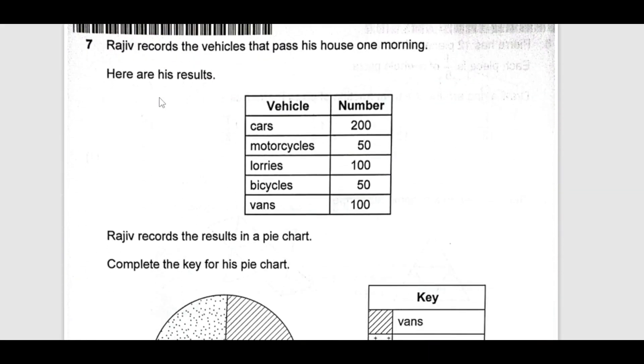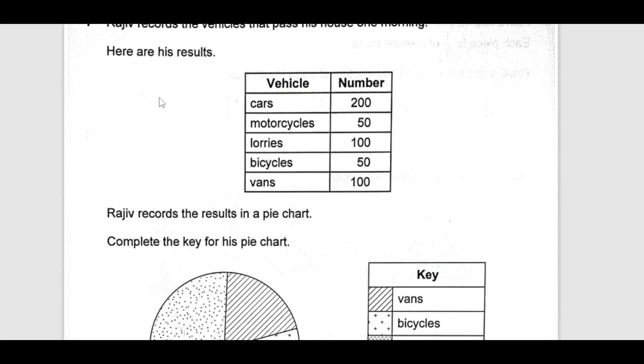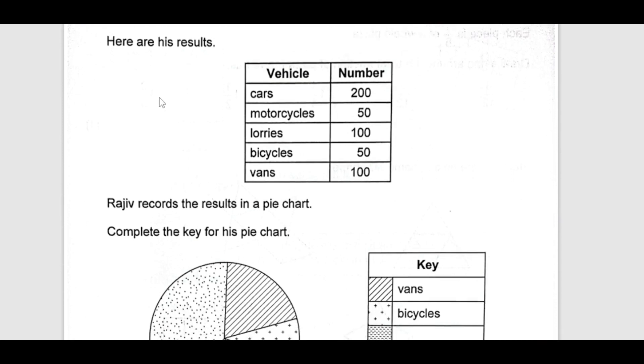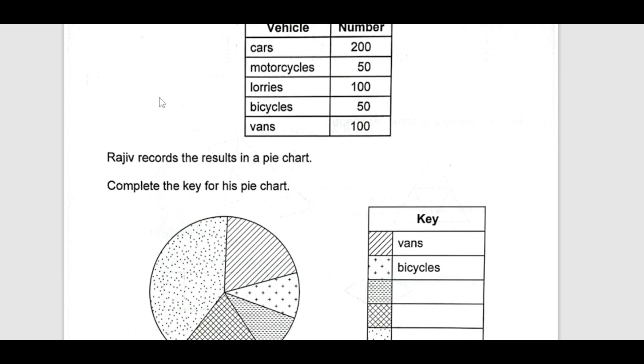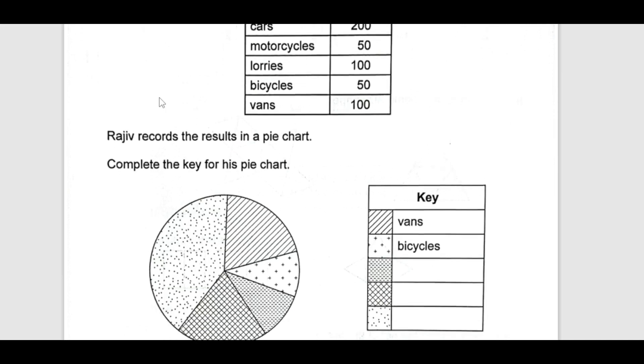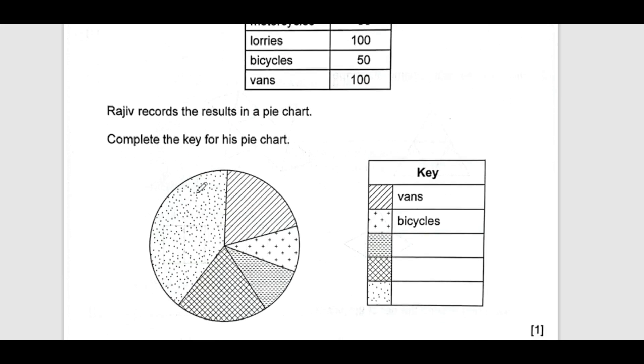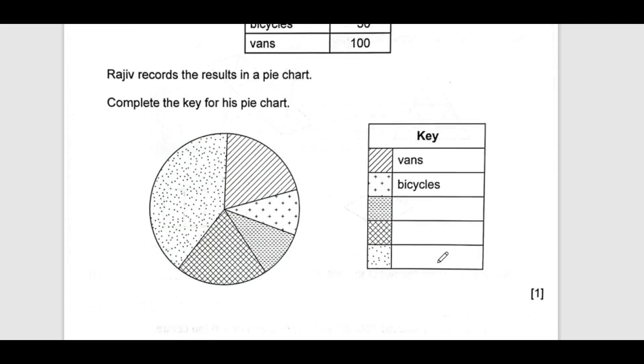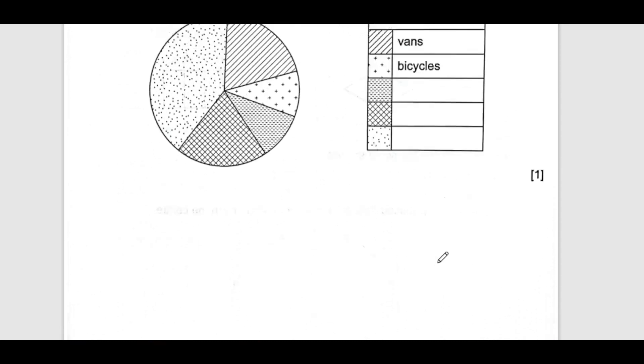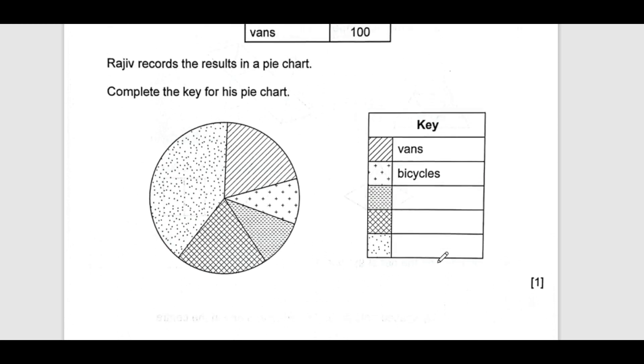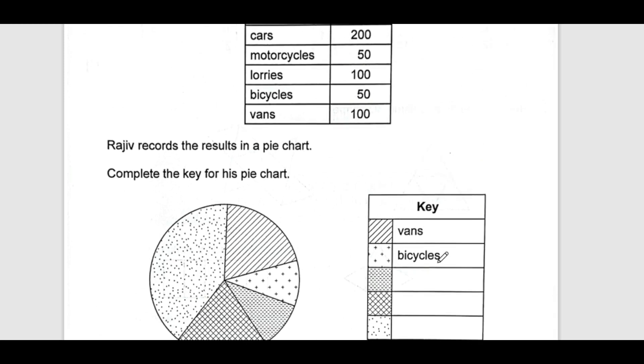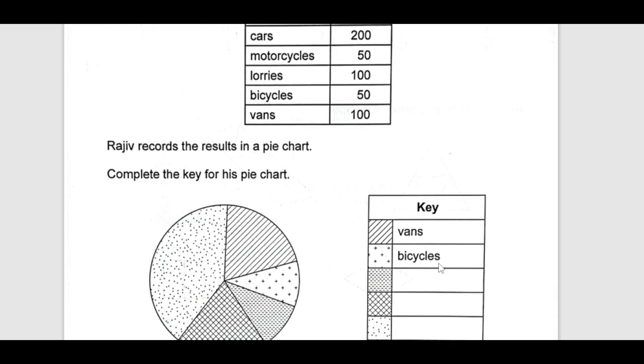Number 7, Rajiv records the vehicle that passes his house in one morning. Here are the results. You can see vehicle and we have numbers here. Car, motorcycle, lorries, bicycle and vans. Rajiv records the result in a pie chart. Here is the pie chart and here is the key. The question is complete the key. Complete the key of his pie chart. Now, we have to compare this information which is given to us and the key. If you can see cars is the biggest number, 200.